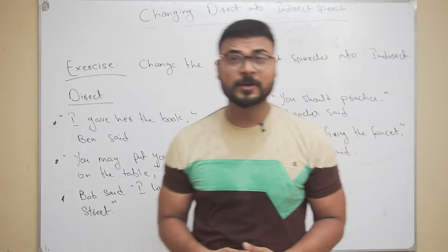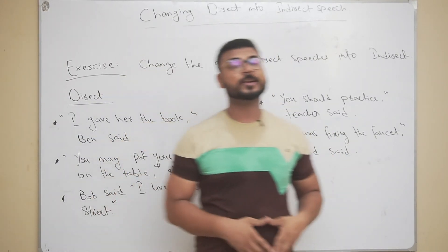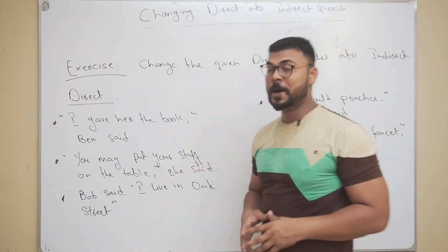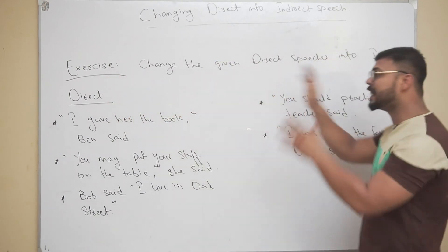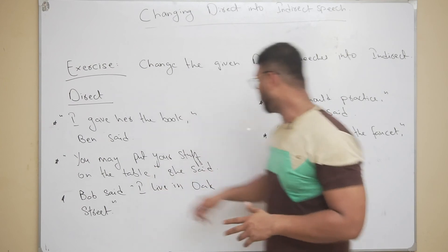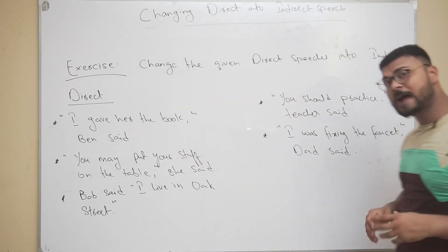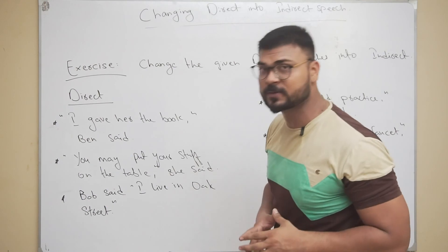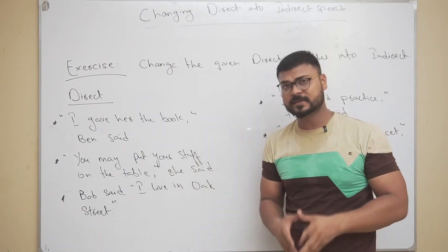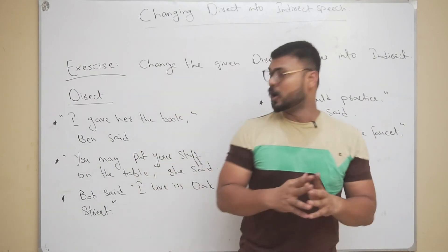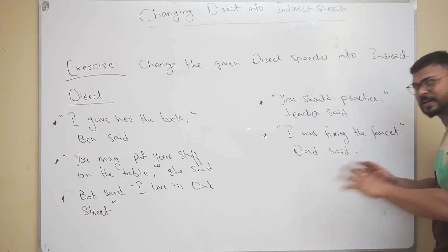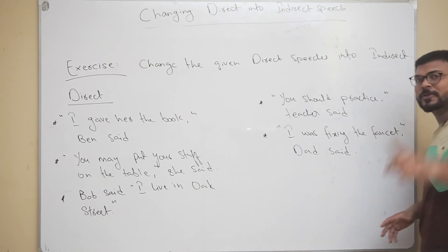So we have successfully learned the conversion of direct into indirect speech. Now there is an exercise for you — you have to change the given direct speeches into indirect speech. There are five sentences to convert. Write them down in the comments below. Just follow the same rules we have studied — they're clear enough.